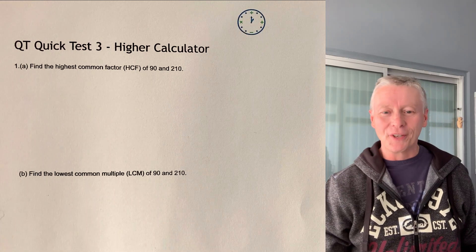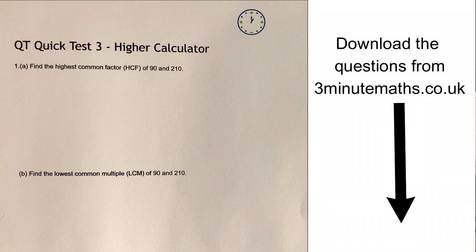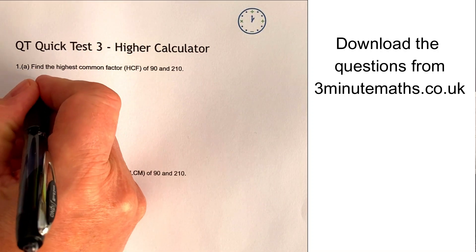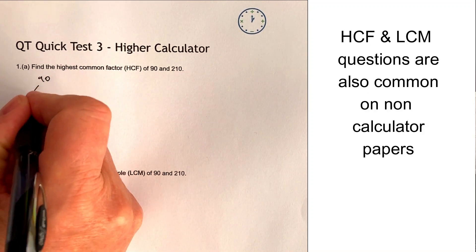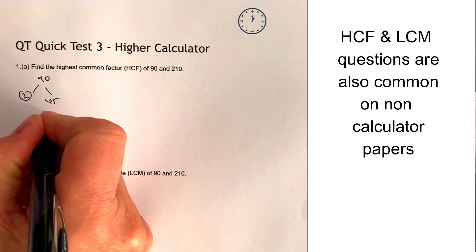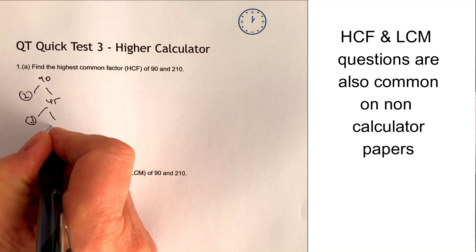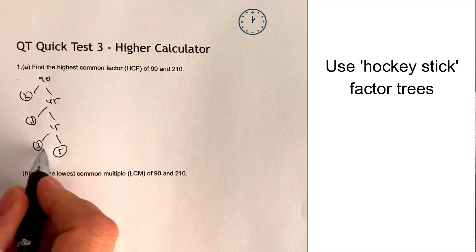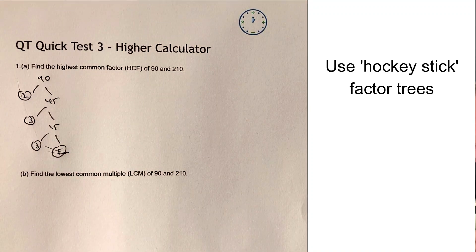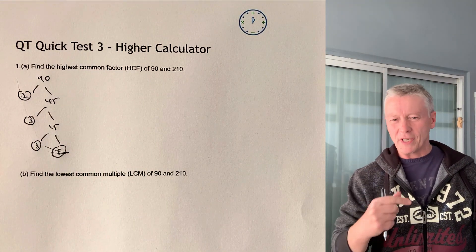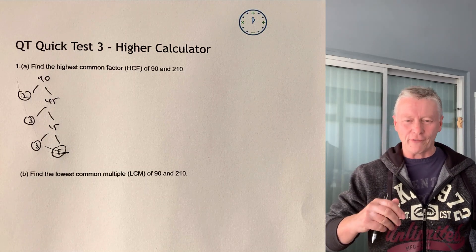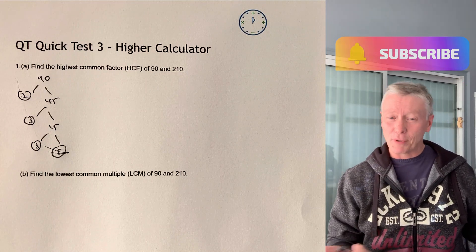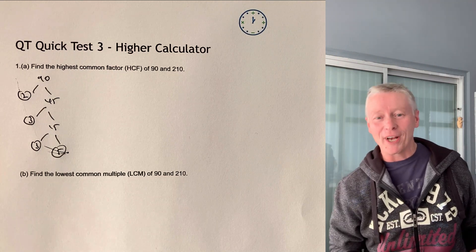Okay, so let's have a look then at question number one. Question number one deals with quite a common question, which is the HCF and the LCM of 90 and 210. So the way I'm going to do it is I'm going to use a factor tree. This is quite a common way of doing it. One of the comments I'd make about it is that it's always good to kind of do this as a bit of a hockey stick. The whole idea of the hockey stick is that it means that you don't kind of miss numbers out. Sometimes the hockey stick is just much easier to do that.